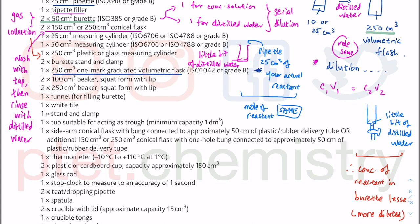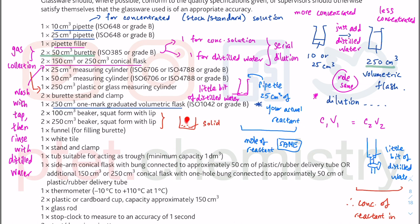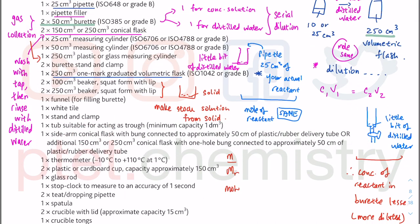The burette stand and clamp is your retort stand. Beakers are used to measure solids when making up stock solutions — place a beaker on a mass balance, measure out the solid, add distilled water, dissolve it, pour into the volumetric flask, wash and repeat. This is called making up a stock solution from solid. The mole of solid equals the mole in solution: N = CV = mass/Mr. It's like dissolving instant coffee — all solid goes into the solution.